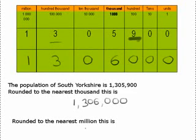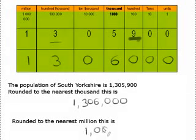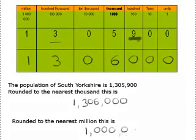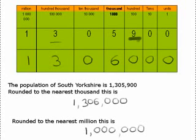The three means we don't round the number up, so the one in the millions column will remain the same. So to the nearest million, the population of South Yorkshire is one million — one with six zeros. So we can say that very roughly the population of South Yorkshire is one million.